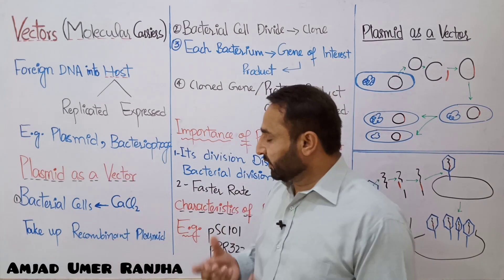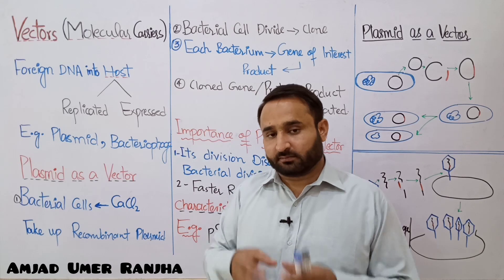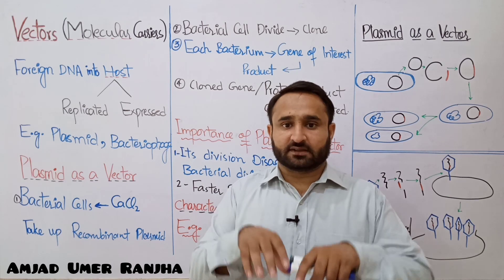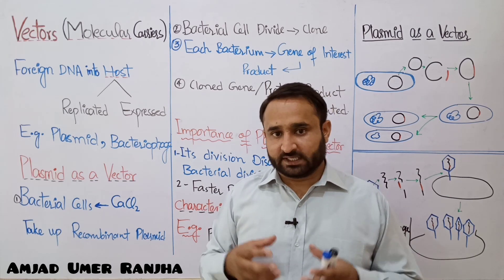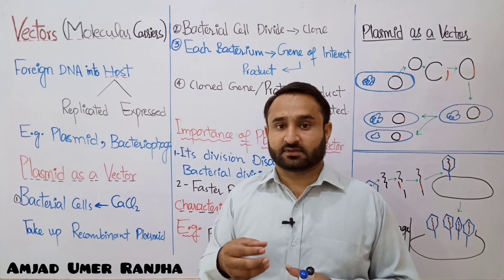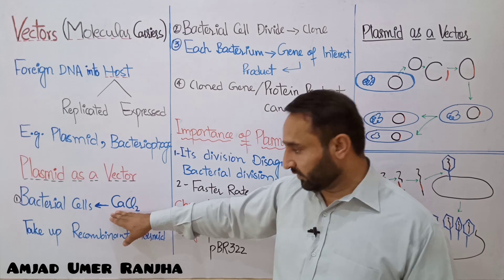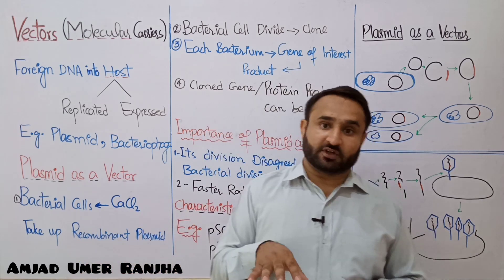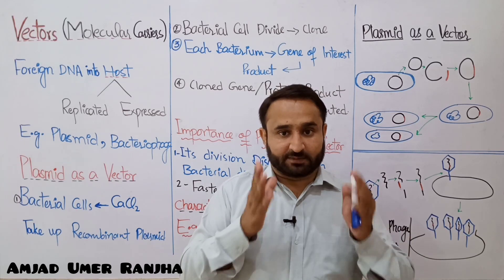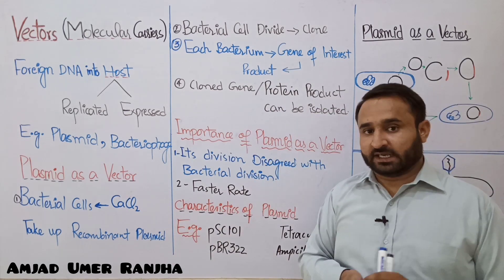We will use plasmid as a vector. If bacterial cells are treated with calcium chloride, many pores are created in their plasma membranes, through which the circular plasmid DNA can easily be taken up. The bacterial cell treated with calcium chloride takes up the recombinant plasmid — the plasmid into which the foreign gene has been inserted.